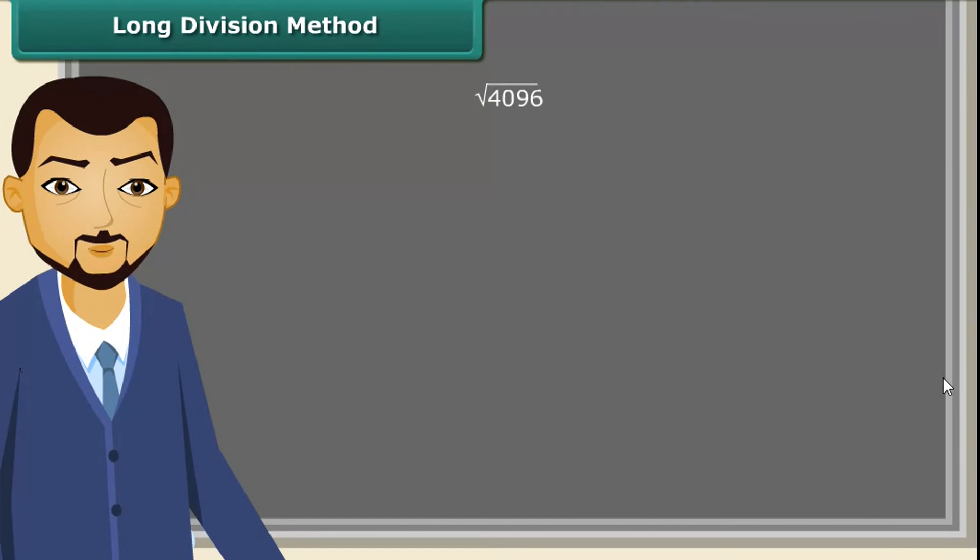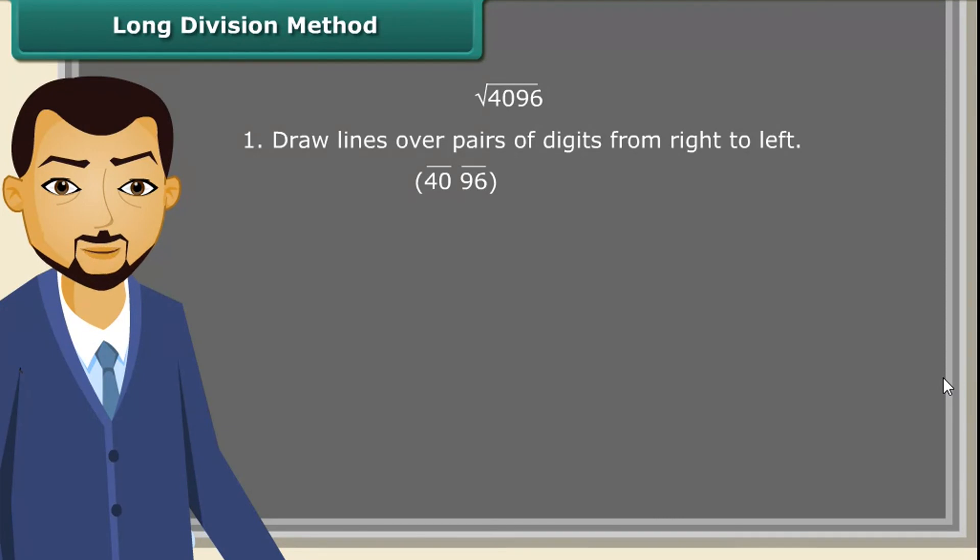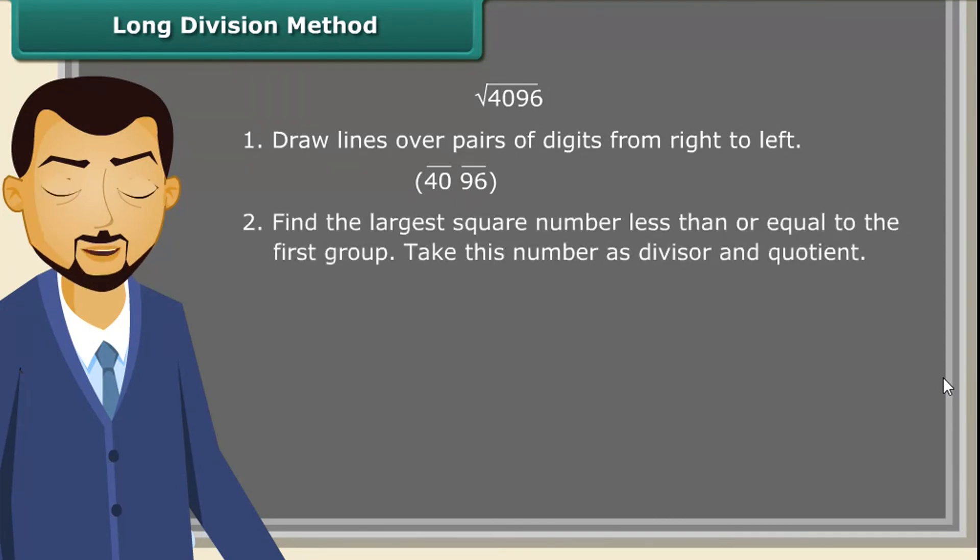For large numbers, the prime factorization method of finding square root becomes difficult. So, we use long division method. Let us look at the steps. First of all, draw lines over pairs of digits from right to left. Next, find the largest square number less than or equal to the first group. That is 40. Since 36 is less than 40, we take 6 as the divisor and 6 as the quotient.